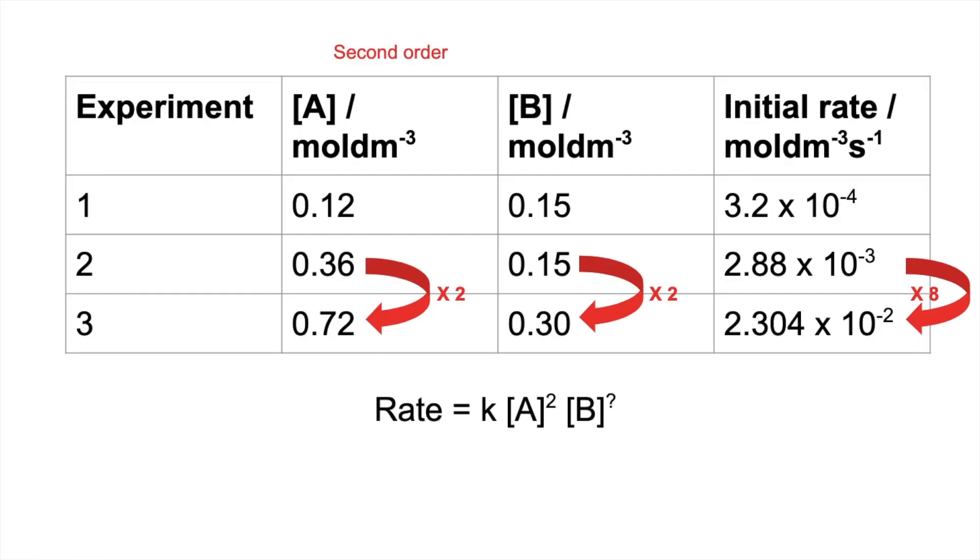So if we bring in the rate equation as it stands at the moment, we get that. So rate equals k, the rate constant, multiplied by the concentration of A squared, multiplied by the concentration of B to an unknown power. But it can only be 0, 1, or 2, because they're the orders we deal with at A level.